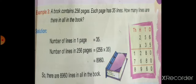And after multiplying 256 and 35, you will get the answer 8960. So there are 8960 lines in all the book.